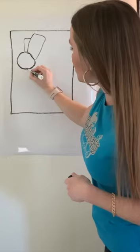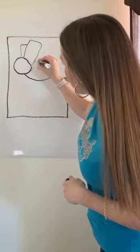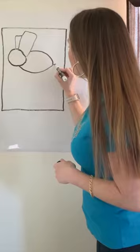You're gonna go to the bottom of your circle and make a bump down and a bump back up. At the back, make a little line.